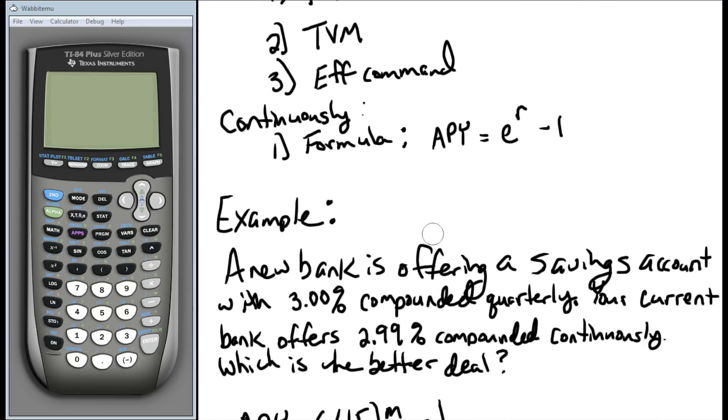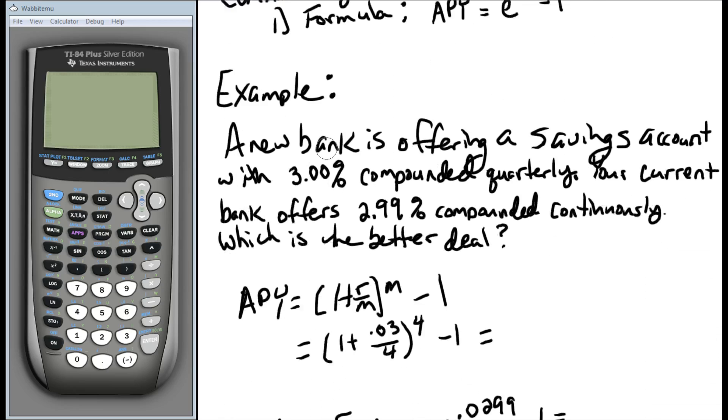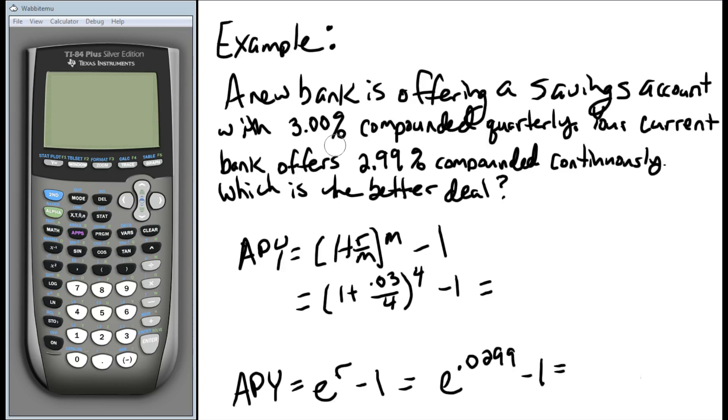So let's take a look at that. For our example, we're talking about a new bank is offering a savings account with 3% compounded quarterly. Your current bank offers 2.99% compounded continuously. Which is the better deal? So this is a good example where we're actually given two different percentages, two different rates, compounded at two different periods, and we need to be able to compare them to say which in the end, in the long run, will be more effective.